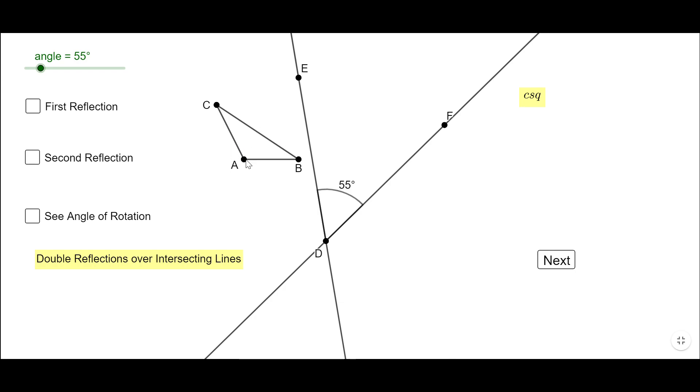I'm going to reflect this triangle ABC over the line DE. And this is the result. You notice triangle A prime, B prime, C prime is a reflection of the triangle ABC.